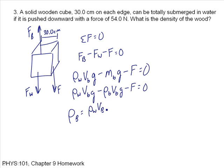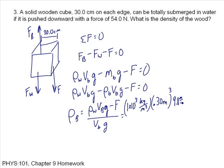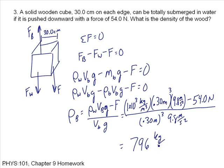It's rho W VB, G minus F over the volume of the block times G. If I just put in my numbers here, the density of water is 1 times 10 to the third, or 1,000 kilograms per cubic meter. The volume of the block is 0.3 meters, that's cubed, 0.3 times 0.3 times 0.3 times 9.8 minus the force, which is 54 newtons, divided by 0.3 meters cubed times 9.8. Putting in those numbers, I get the density, which is 796 kilograms per cubic meter.